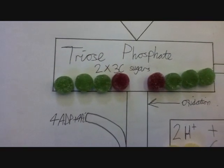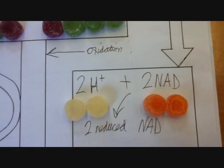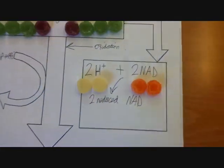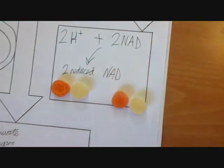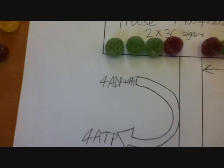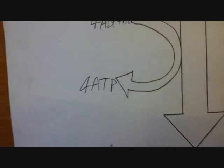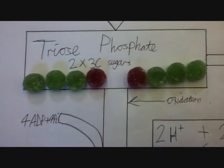The next step is that our NADs become reduced by the two hydrogen ions, giving us reduced NAD. We also get four ADP molecules gaining four inorganic phosphate molecules through phosphorylation to become ATP. Now let's see what happens to our triose phosphate as it becomes pyruvate.